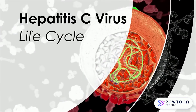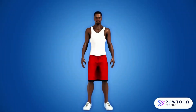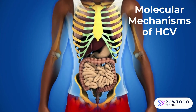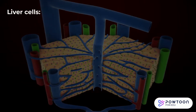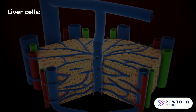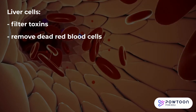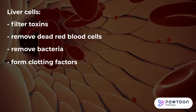Now that you know a little bit more about what hepatitis C is and how it's transmitted, let's go into the molecular mechanisms. First, the liver is an essential organ responsible for filtering out toxins in your bloodstream, removing dead red blood cells, and removing bacteria. Liver cells also form clotting factors to help stop bleeding and create bile, which is used by other organs to digest fats from the foods you eat.